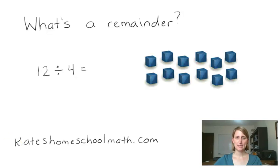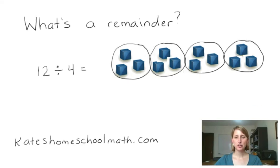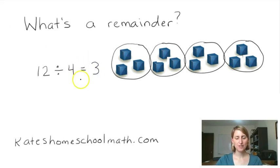So first of all, what is a remainder? Well, sometimes we can divide things up evenly. Here in this example I have 12 blocks to divide among four people. If we evenly split up the blocks into four groups, we see that there are three blocks in each group. 12 divided by 4 divides evenly. We can say that 12 is divisible by 4 and it equals 3. There is no remainder.